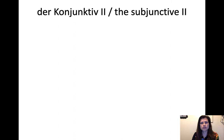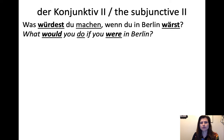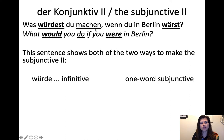So, the subjunctive two — der Konjunktiv zwei. Here we have an example: "Was würdest du machen, wenn du in Berlin wärst?" — What would you do if you were in Berlin? We have two clauses, and both have the subjunctive two in them. One uses würdest and machen — two verbs working together, a compound verb form. The other, wärst, is just one word. There are two ways to do the Konjunktiv zwei.